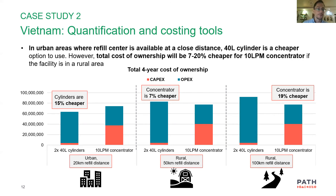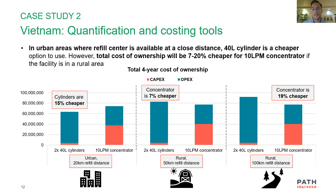In urban settings close to a refilling station, cylinders are going to be cheaper because you don't pay high delivery costs. But the farther away you are from a filling station, the more you pay for transport and logistics, so concentrators become a cheaper option. If demand increases to around four cylinders a week, concentrators become a much better long-term option because you're not paying for trucks to make repeated deliveries to the health center.